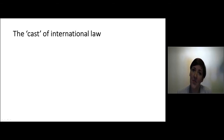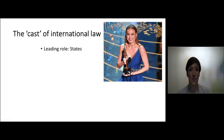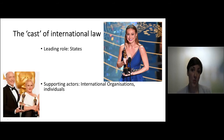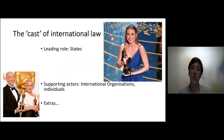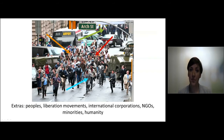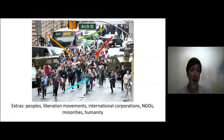The cast of international law consists of a lead character, and that lead character is the state. Then there are also supporting roles — supporting actors — and these are the international organizations and individuals. But in any film, you have a whole bunch of extras, and these extras you do not usually see with their names in the titles. These extras in international law can be, for example, NGOs, humanity as a whole, peoples, armed groups. These extras are not yet prominent enough on the stage to be actually called a subject of international law.